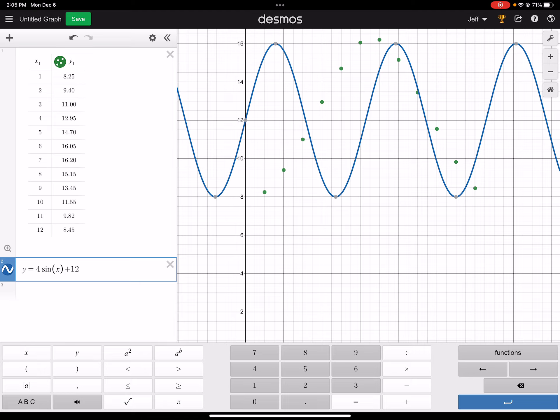And then I could go and I could change the period and the phase shift and get it close. And you could do that, but Desmos can do that linear regression for you, as can a graphing calculator.